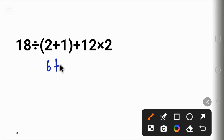6 plus 12 will give us 18, and 18 times 2 will give us 36. This answer is not correct.